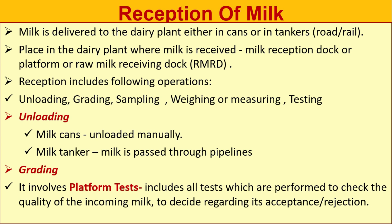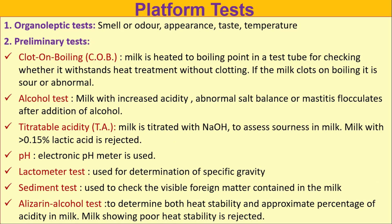During unloading, milk cans are unloaded manually, while milk tankers are unloaded by passing milk through pipelines. Grading involves platform tests — all tests performed to check the quality of incoming milk to decide regarding its acceptance or rejection. The first platform test is the organoleptic test.